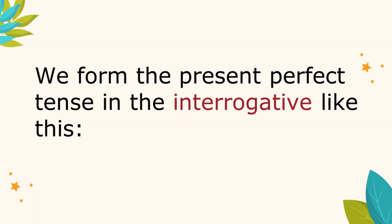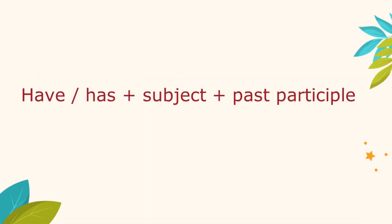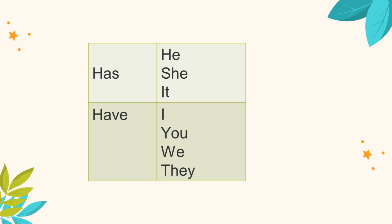We form the present perfect tense in the interrogative like this: have or has plus subject plus past participle. We say: has he, has she, has it, have I, have you, have we, have they.